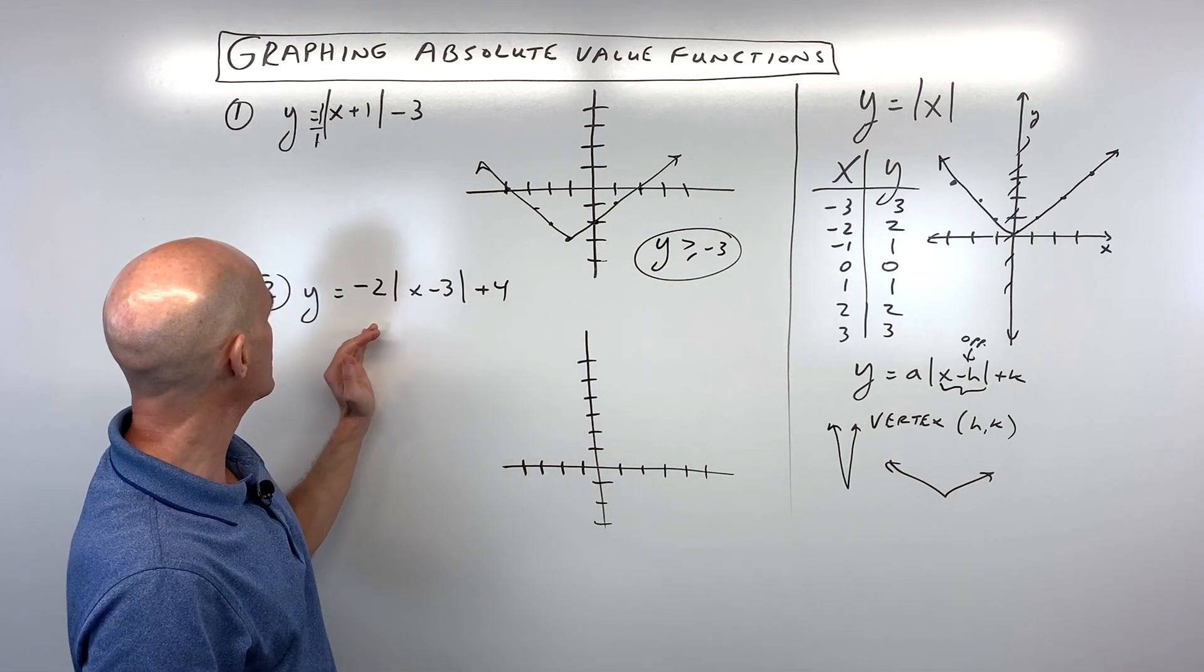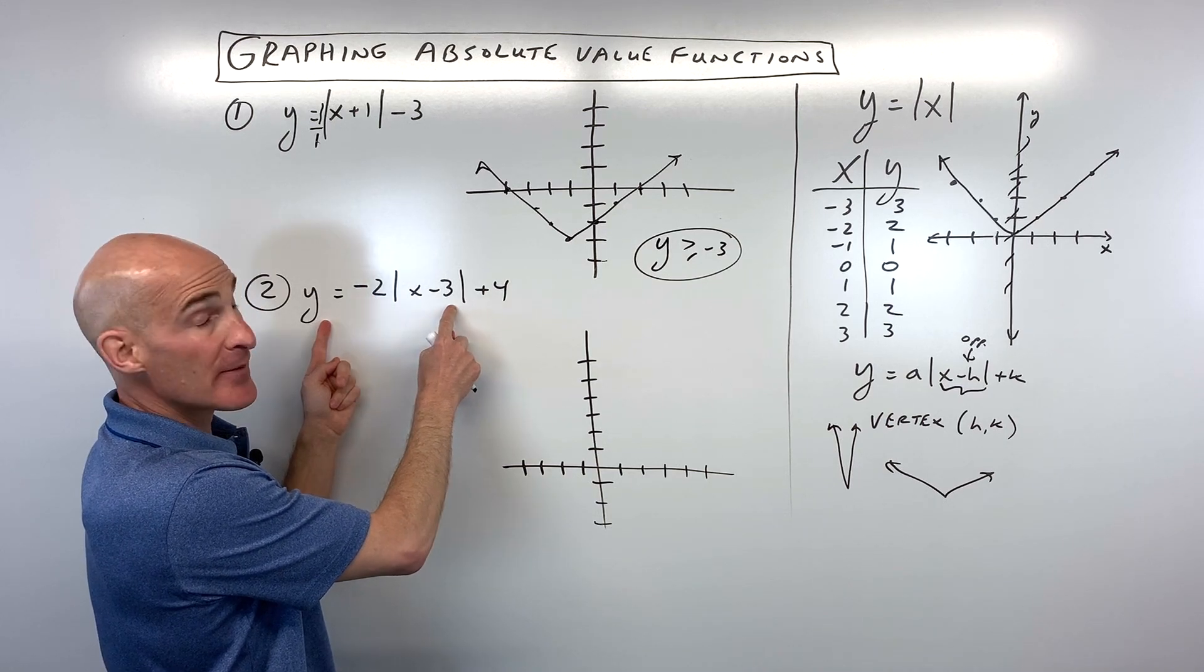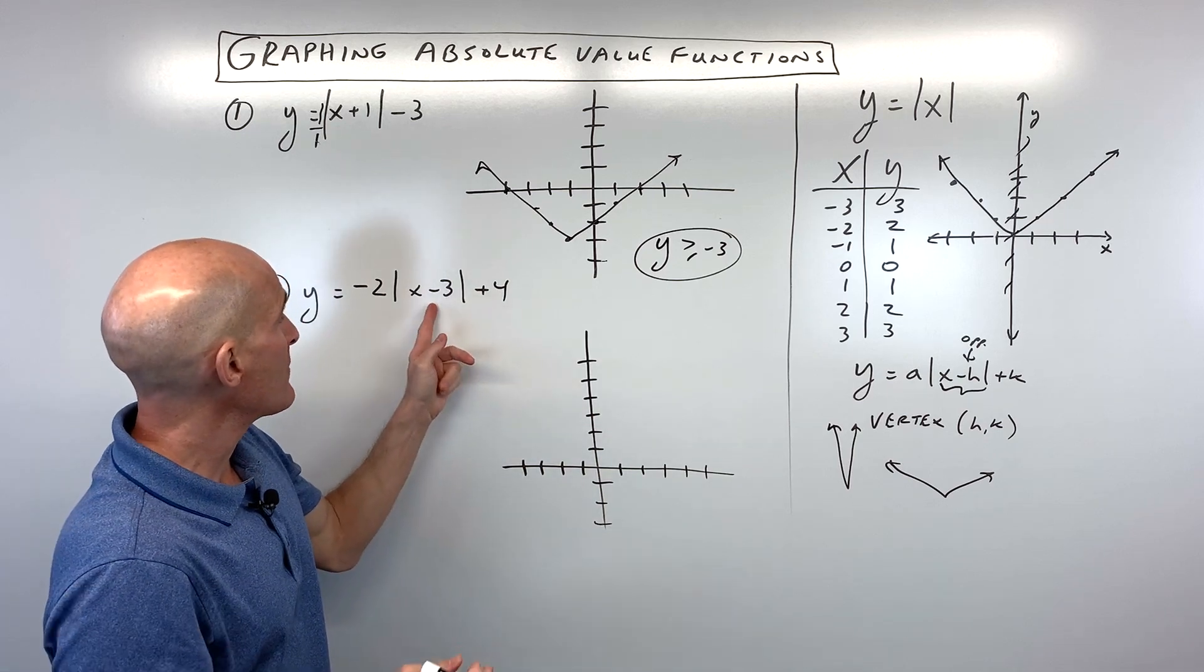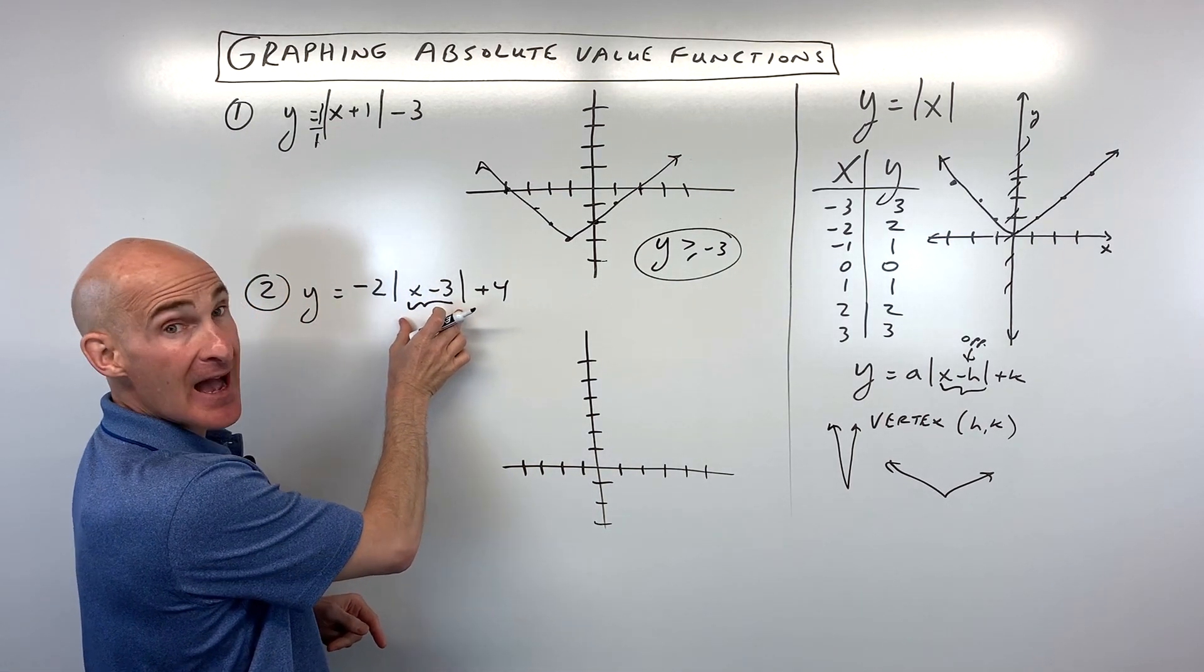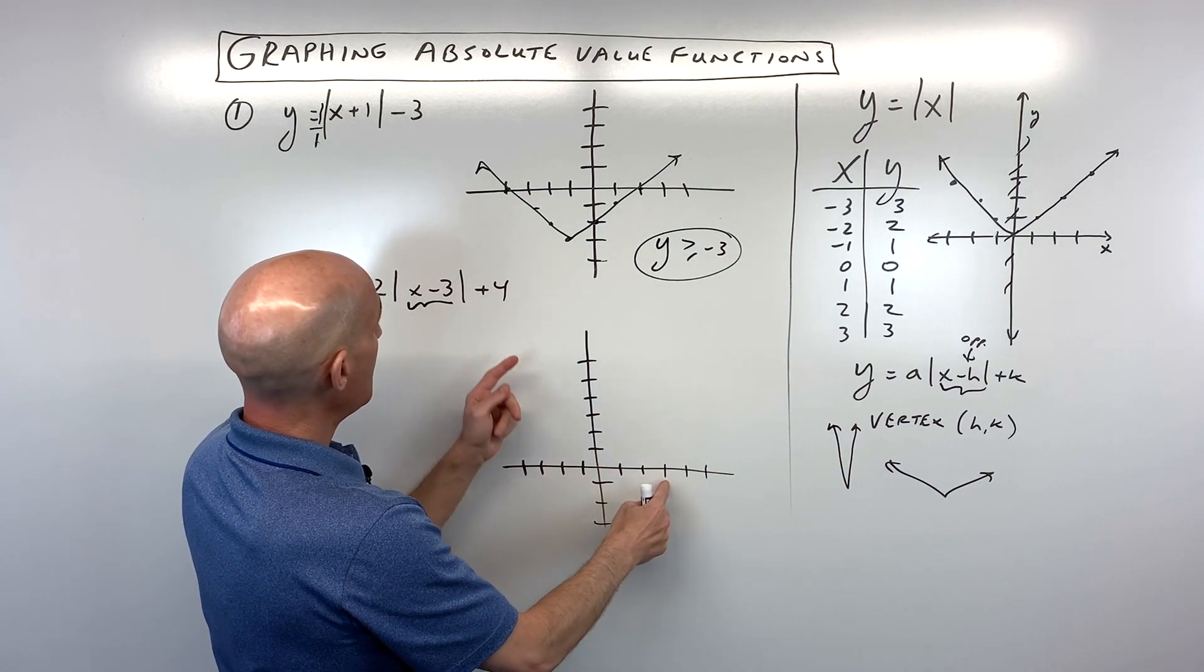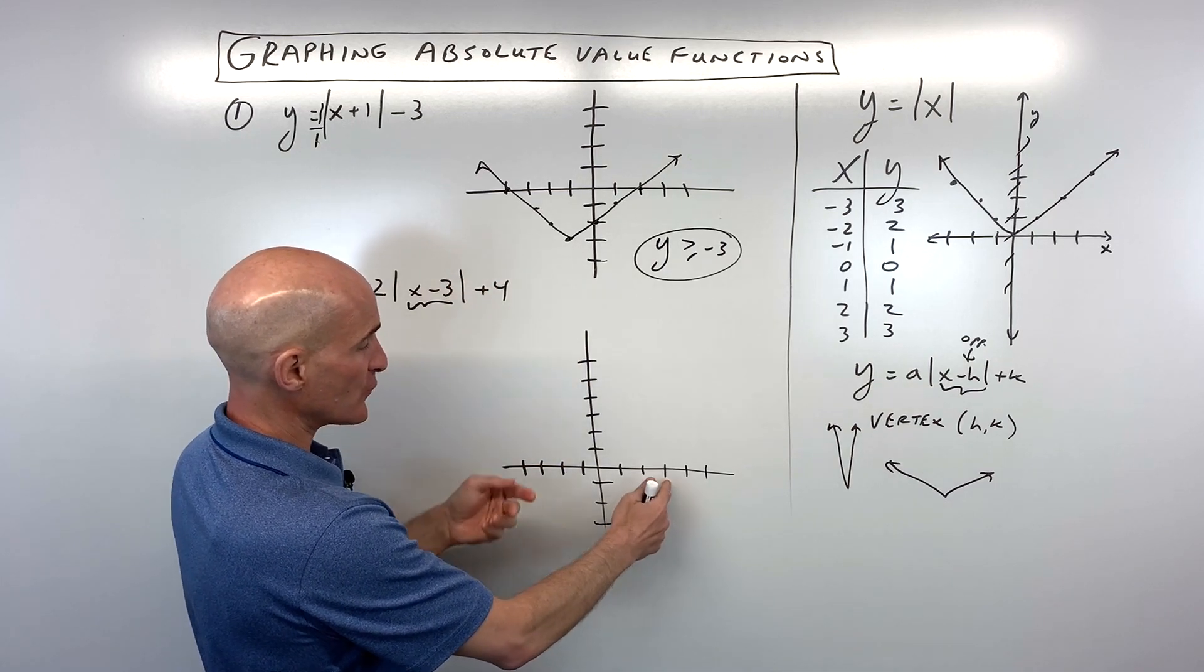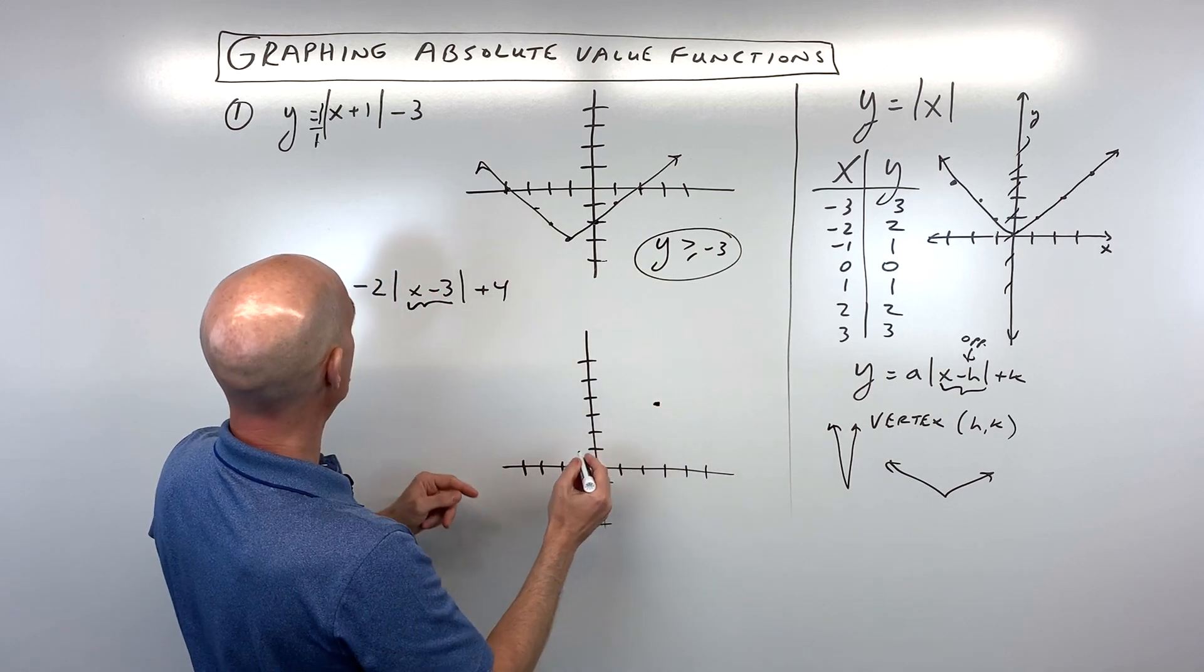See if you can do this one. Number two, it says y equals negative two times the absolute value of x minus three plus four. So where is that vertex? Well remember, this one here in the parentheses, in the absolute value bars I should say, has the opposite effect. The minus three is actually going to shift it right three. And the plus four is going to have the same effect as that positive sign. It's going to go up positive four. So we're going to go right three, up four. One, two, three, four. Right about there. That's our vertex.